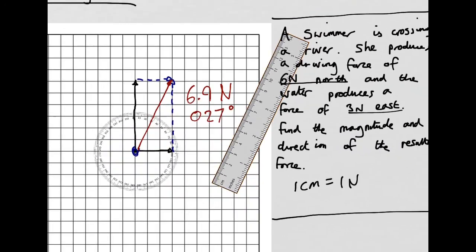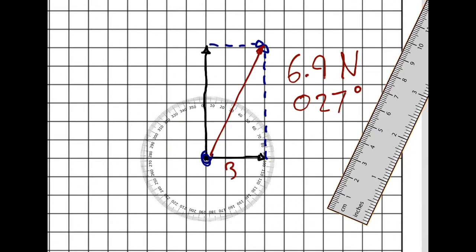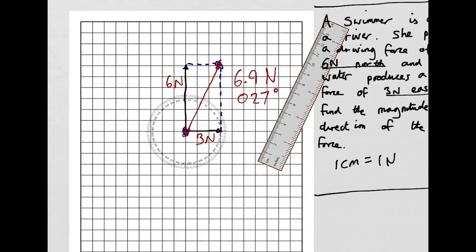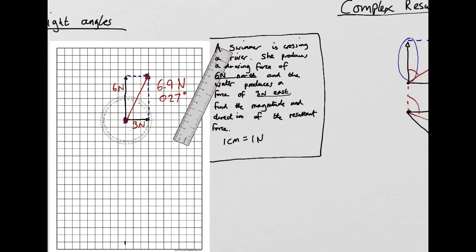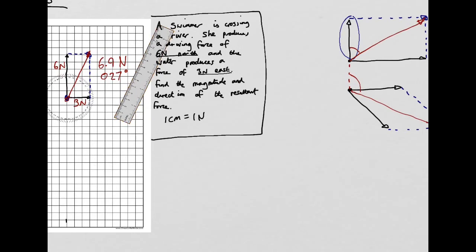So all I've done is drawn two forces — a 3 newton arrow and a 6 newton arrow — then moved the arrow to top and tail, producing a square of forces. I can then find the resultant force from tail to tip. Now let's try some more complicated situations.